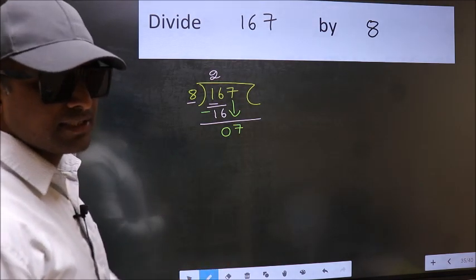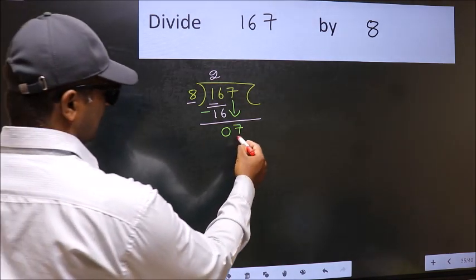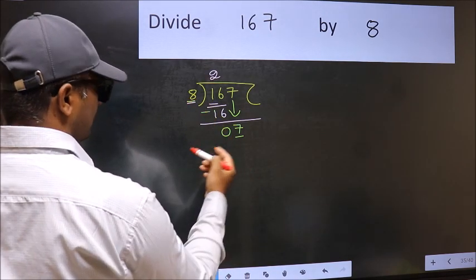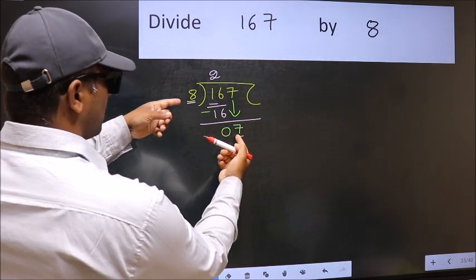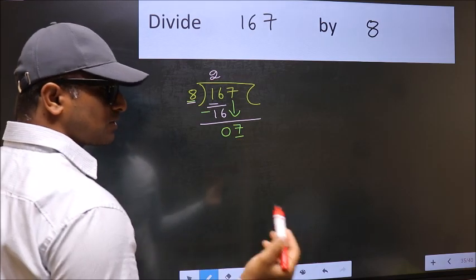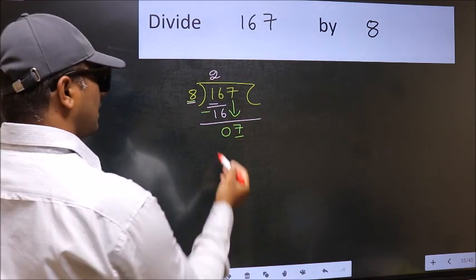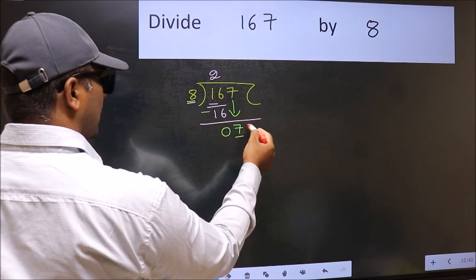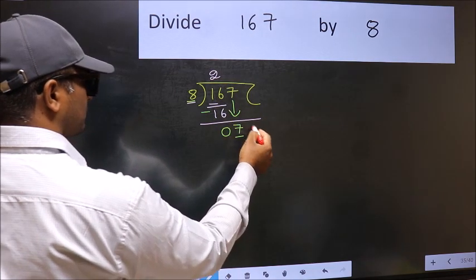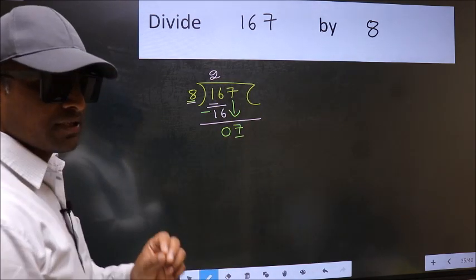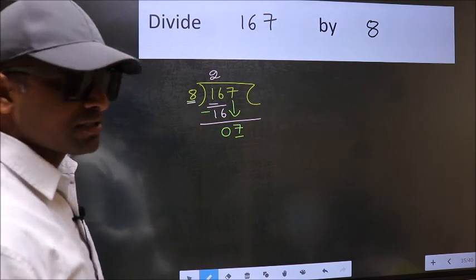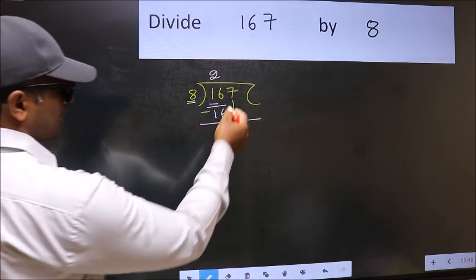Here we have 7 and here 8. 7 is smaller than 8. So what many do is they directly put dot and take 0, which is wrong. Why is it wrong? Because just now you brought this number down, and in the same step you want to put dot and take 0, which is wrong.